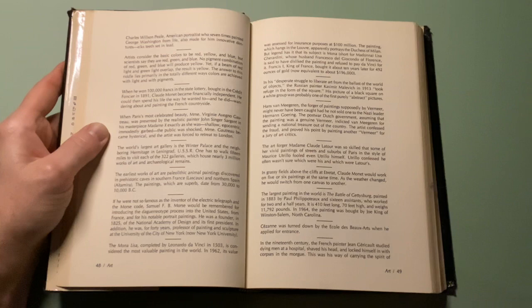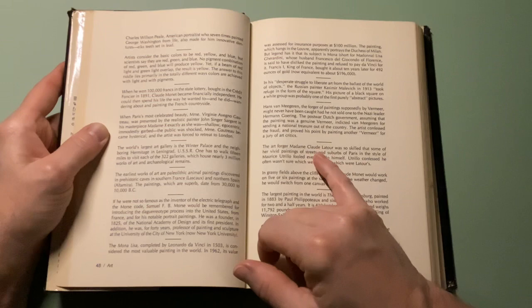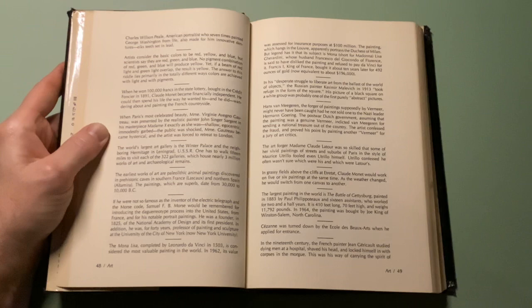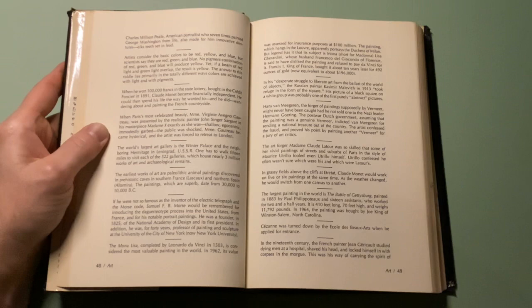The art forger Claude Latour was so skilled that some of her vivid paintings of streets and suburbs of Paris in the style of Maurice Utrillo fooled even Utrillo himself. Utrillo confessed he often wasn't sure which was his and which was Latour's.